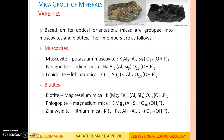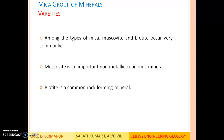The various chemical compositions of these varieties of micas are given here. Among these types, muscovite and biotite occur very commonly. Muscovite is an important non-metallic economic mineral — it is not a rock-forming mineral but a non-metallic economic mineral. Biotite is the common rock-forming mineral.